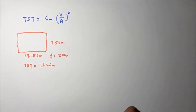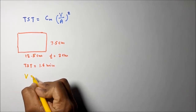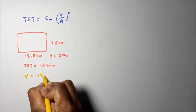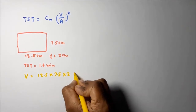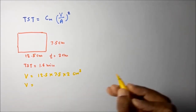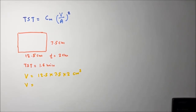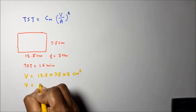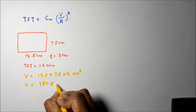Let me find the total volume. The total volume of the part is equal to 12.5 × 7.5 × 2 cubic centimeters, which is equal to 187.5 cm³.